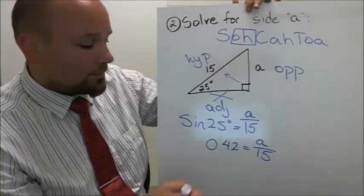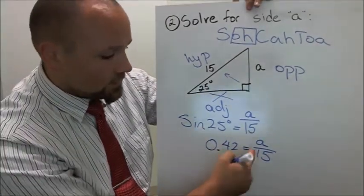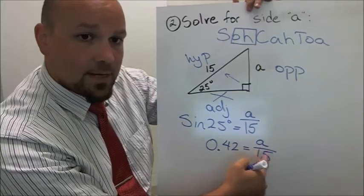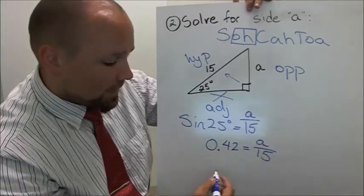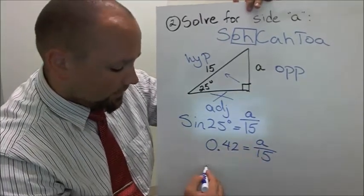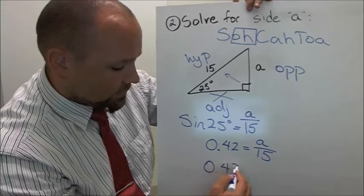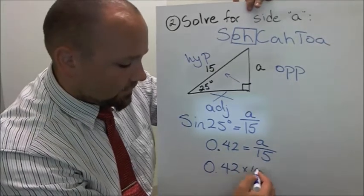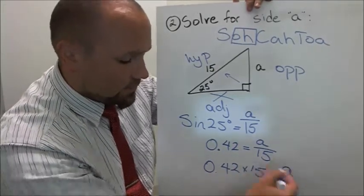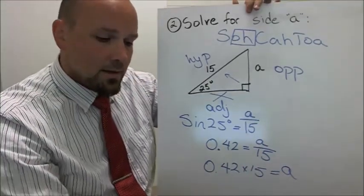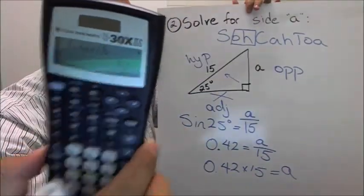So that means 0.42 is equal to A divided by 15. And now, remember when we reviewed, we figured out how to solve for that A. This is dividing by 15. So to get rid of that, all we have to do is multiply by 15. So 0.42 times 15 is equal to A. And we get the answer 6.3.